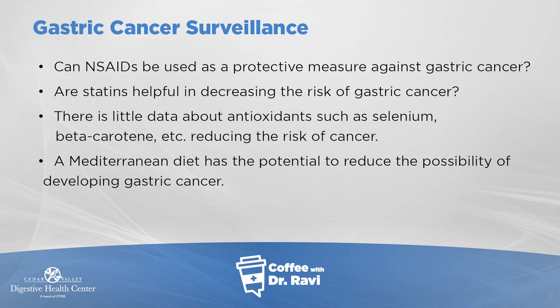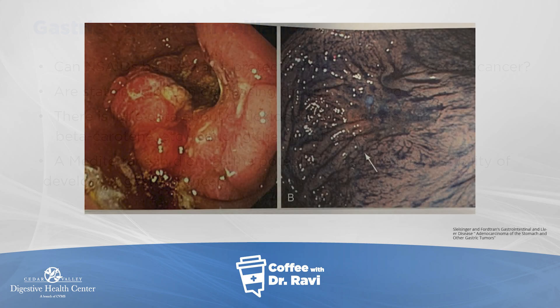When you look at gastric cancer on endoscopy, you can see this ulcer — it's a bigger ulcer, it looks angry, the edges are thickened and raised. So when somebody has an ulcer, we typically go back in a couple of months to make sure the ulcer is healed, because a non-healing ulcer could be gastric cancer.